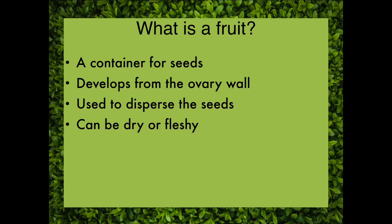A fruit, to a botanist, is the container for the ripened seeds. Once the seeds are formed with the embryonic plants inside, the job of the fruit is to figure out a way to get those seeds away from the mother sporophyte — to find a new place where those seeds can find a purchase and grow into new sporophytes. The fruit develops from the ovary wall, or if not from the ovary wall, from what we call accessory tissue. And while we normally think of fruits as being fleshy, they can also be dry.